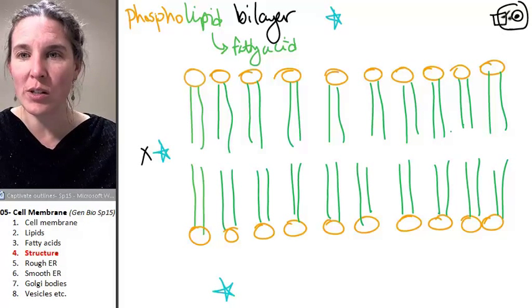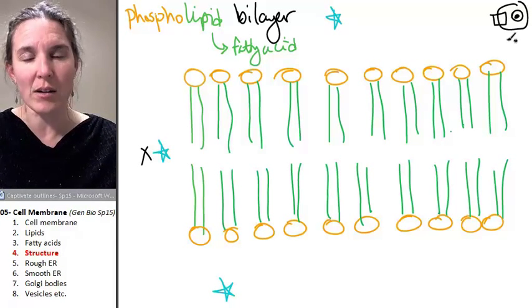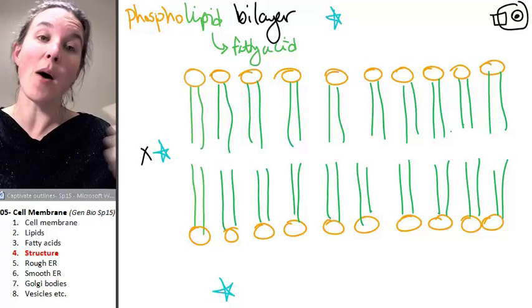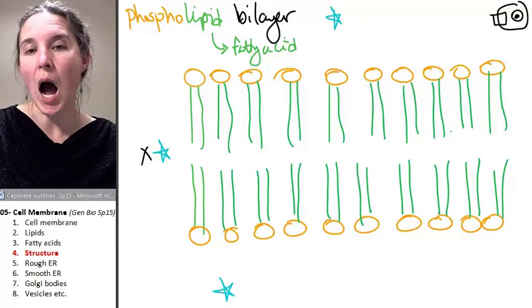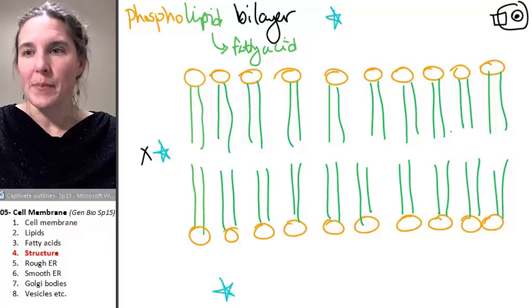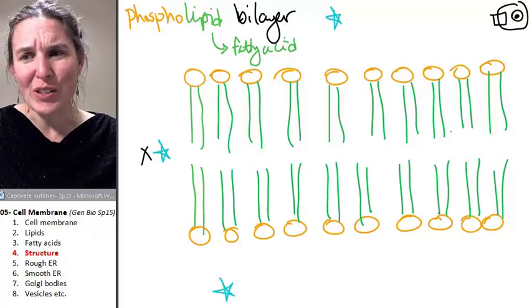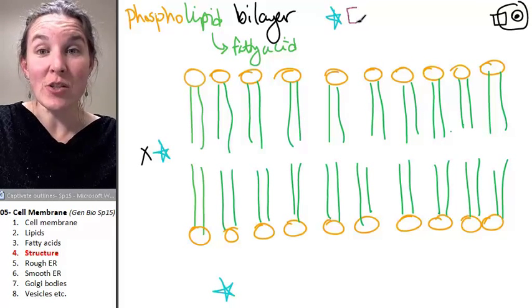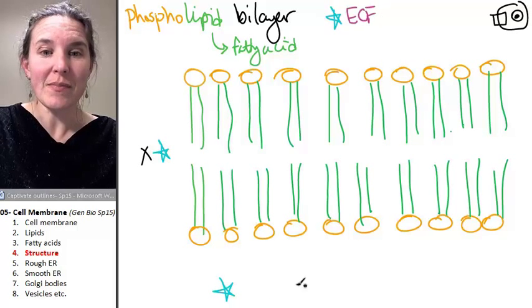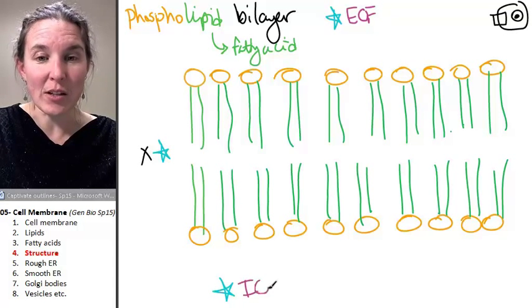If I were a rock star, I could totally draw out a bilayer right in there. I am not a rock star. I am almost a rock star, though. All right, so let's just arbitrarily label this as my extracellular fluid and this as my intracellular fluid.